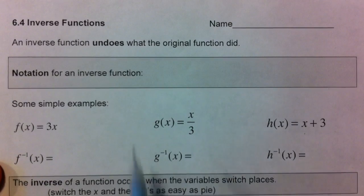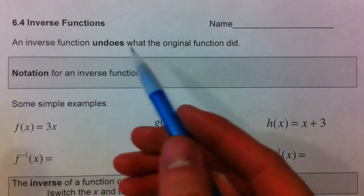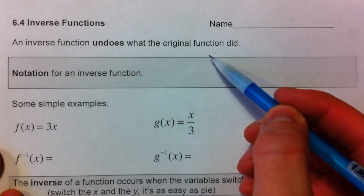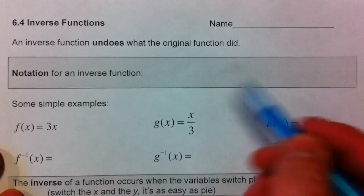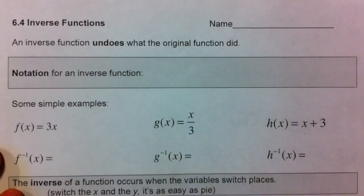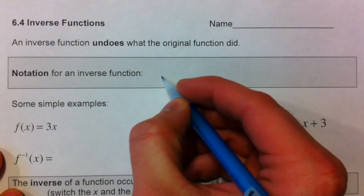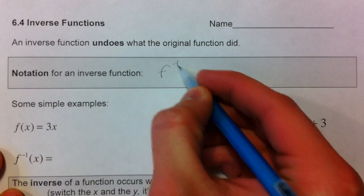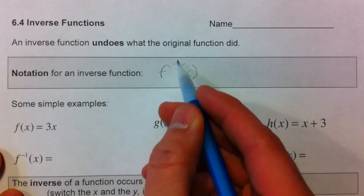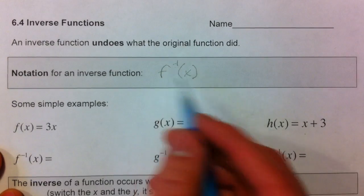Inverse functions. An inverse function undoes what the original function did. Let's say you're the function and you make your bed every morning. That would make your little sibling who undoes your bed and jumps on it up and down the inverse function, because it makes it undone again. We use f to the negative 1 of x for the inverse function, read as f inverse of x. It has nothing to do with negative exponents — everything to do with just the inverse.